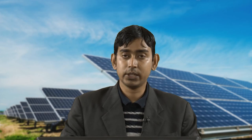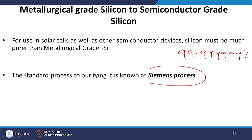Today we will learn how to make semiconductor grade silicon starting from metallurgical grade silicon. For use in solar cells as well as other semiconductor devices, silicon must be very pure compared to metallurgical grade silicon. The required purity is 99.999999% — that is six nines after the decimal point. The standard purification process is known as the Siemens method or Siemens process.